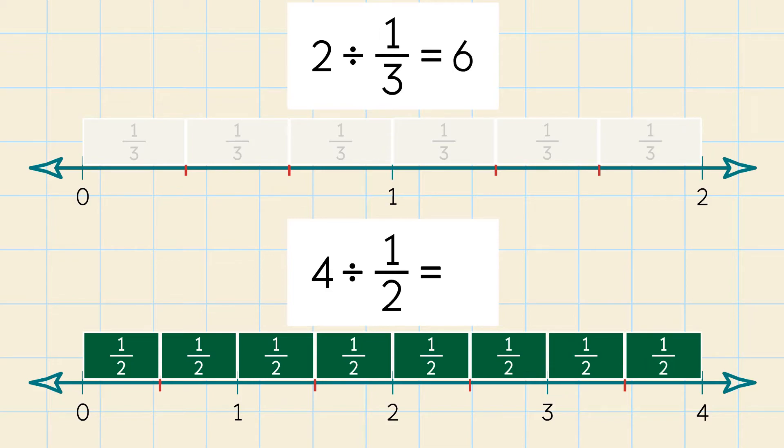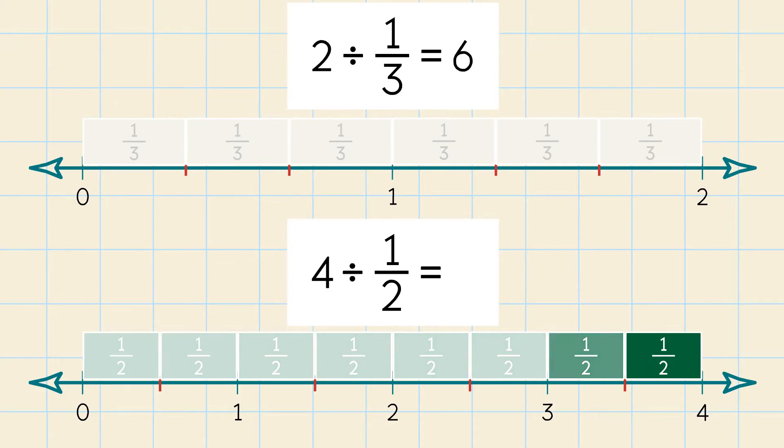Skip count by halves from 0 to 4. We have 8 skips, so the quotient is 8.